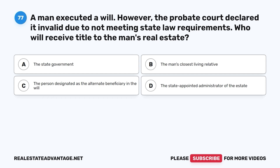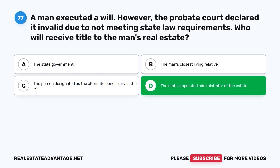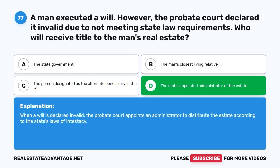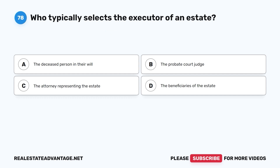Question 77: A man executed a will; however, the probate court declared it invalid due to not meeting state law requirements. Who will receive title to the man's real estate? A. The state government. B. The man's closest living relative. C. The person designated as the alternate beneficiary in the will. D. The state-appointed administrator of the estate. The correct answer is D. When a will is declared invalid, the probate court appoints an administrator to distribute the estate according to the state's laws of intestacy.